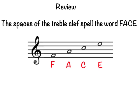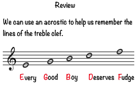We also learned that spaces are notes in between the lines. We can use an acrostic to help us remember the lines of the treble clef. The first line is E — Every. Second line, G — Good. Third line, B — Boy. Fourth line, D — Deserves. Fifth line, F — Fudge. Every Good Boy Deserves Fudge.